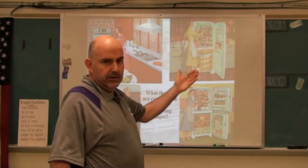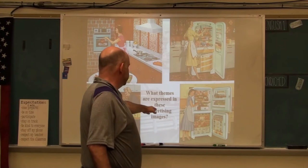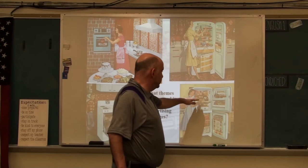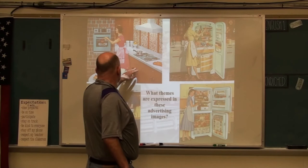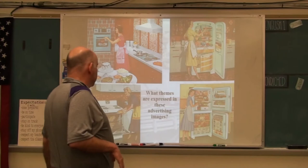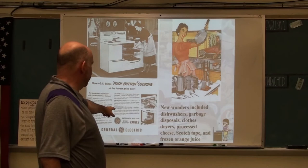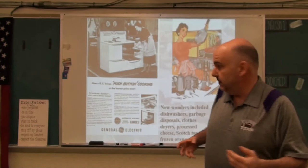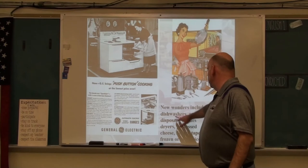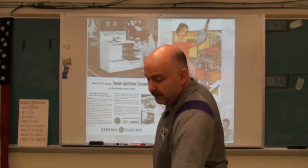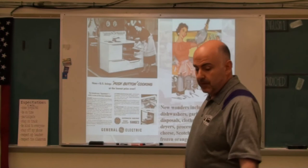Look at these advertisements — you see these kitchens. The themes expressed in these advertising images are about making mom's life easier: you can make lots of pies in that oven, look at all the space in the refrigerator-freezers, look how big this oven is, her cooktop, all this food she's making to feed her family — how great and convenient things are. GE brings push-button cooking at its lowest price ever. Electric ranges — before this, stoves and ovens were gas. New wonders included dishwashers, garbage disposals, clothes dryers, processed cheese, Scotch tape, and frozen orange juice — stuff we take for granted. Scotch tape didn't exist until the 1950s.